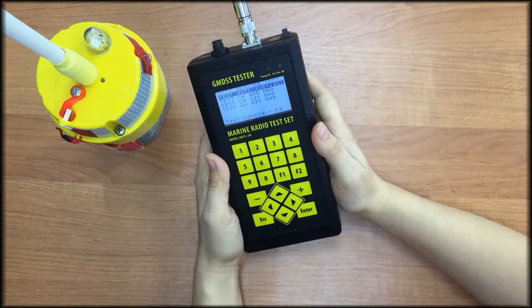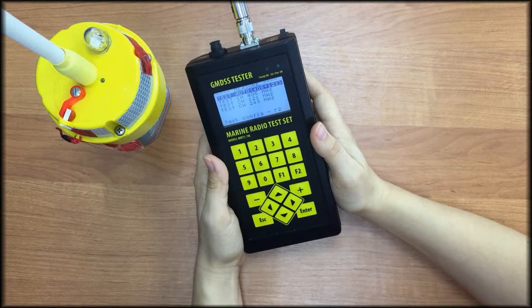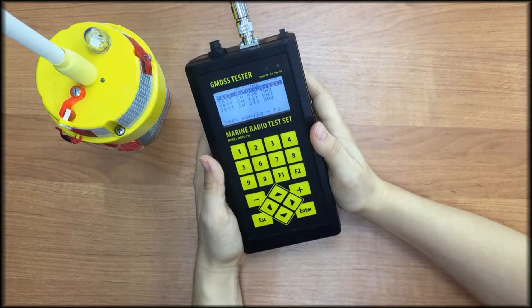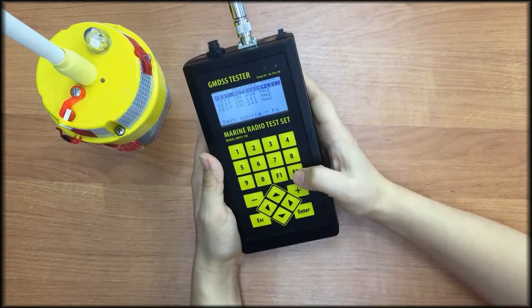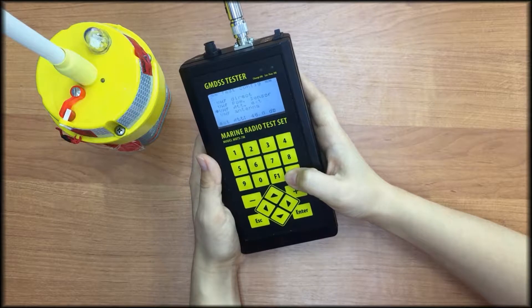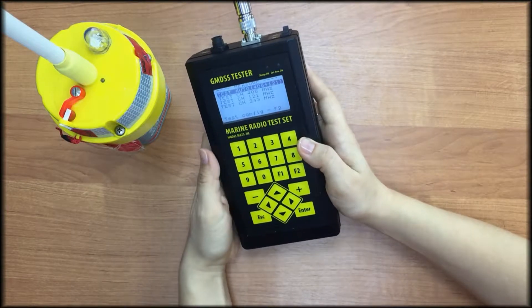In this mode, the tester will automatically measure all E-PIRB's parameters in channels 406 MHz and 121.5 MHz. We should select the proper test configuration. Press add to key, select test by antenna and escape. It will be saved automatically.